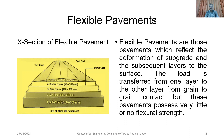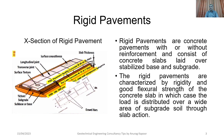Next, rigid pavements. Rigid pavements are concrete pavements with or without reinforcement, and consist of concrete slabs laid over a stabilized base and subgrade. They are characterized by rigidity and good structural strength of the concrete slab, in which case the load is distributed over a wide area of subgrade soil through slab action.